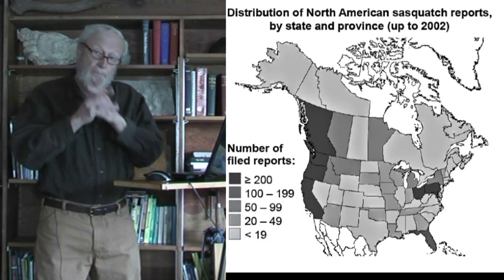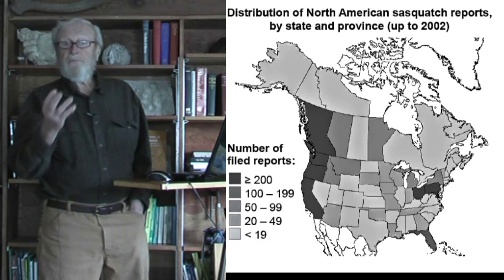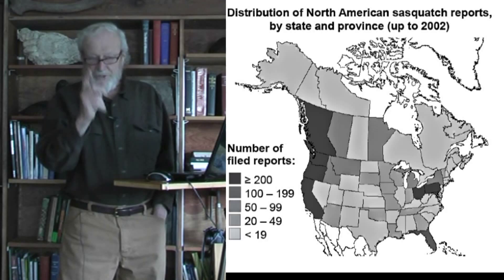But there is this area of numerous reports, Ohio, Pennsylvania, even Maryland in the American Midwest and East, and if we accept the swamp monkey or skunk ape of Florida as a Sasquatch, then we have to add Florida as well.